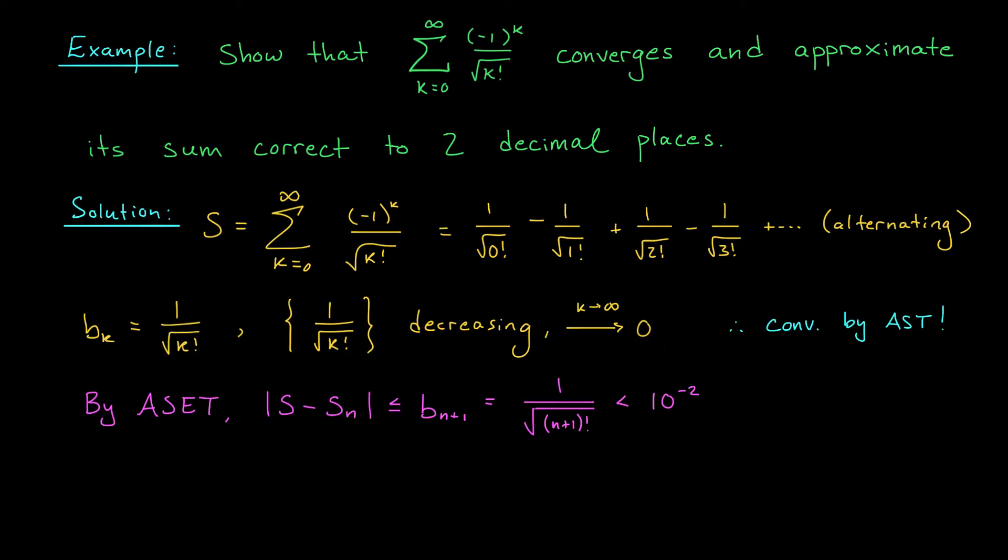If you try a few values, you should find that n equals 7 is the magic number. When n is 7, 1 over the square root of n plus 1 factorial is 1 over the square root of 8 factorial. If you punch this into your calculator, you should find that it's a little bit less than 0.005. So it's certainly less than 10 to the minus 2.